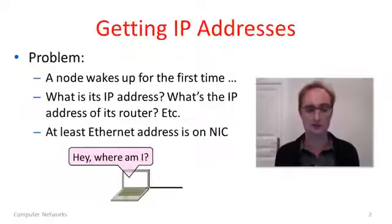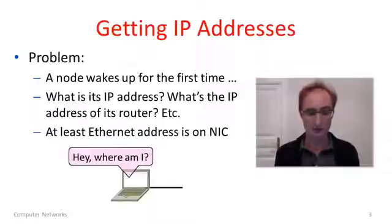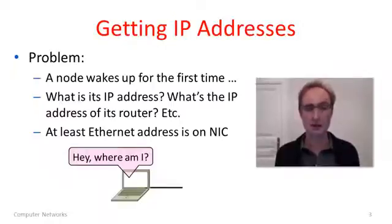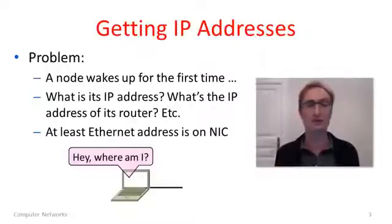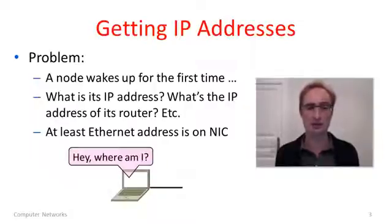The first question is getting an IP address. Imagine you're a node that's just been powered on — you wake up for the first time and you don't know very much. In particular you'd like to know your IP address, the IP address of the nearby router, what network you're on, and so forth. One thing you do know is your Ethernet address, because the Ethernet address is set on the hardware NIC — the network interface card itself. So when a node wakes up attached to Ethernet it knows its Ethernet address but not its IP address.